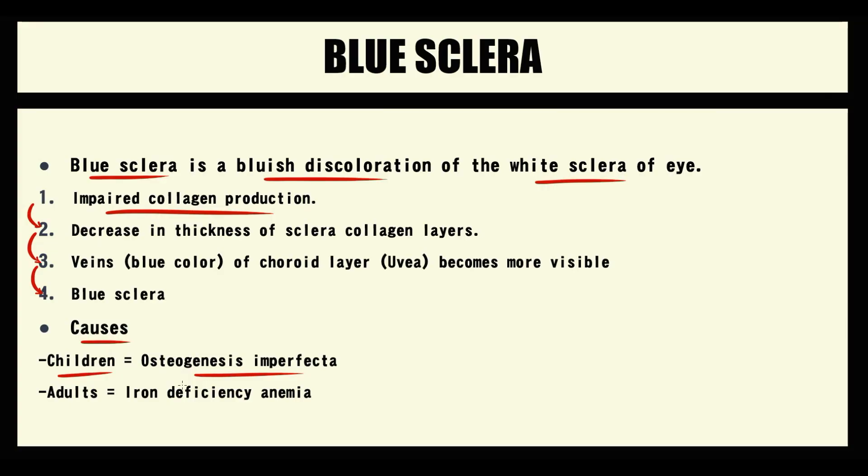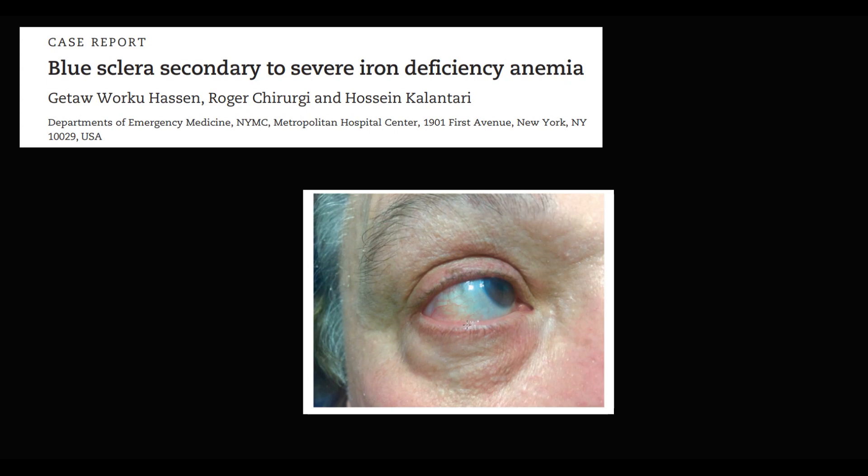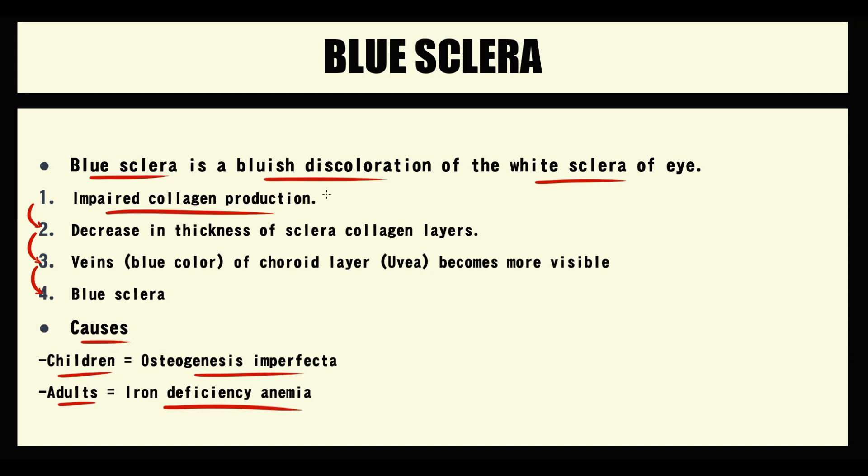But more commonly we can see blue sclera in adults with iron deficiency anemia. On this image we can see blue sclera in patients with iron deficiency anemia. And the reason why blue sclera develops in both osteogenesis imperfecta and iron deficiency anemia is that these two conditions disrupt normal production of collagen.